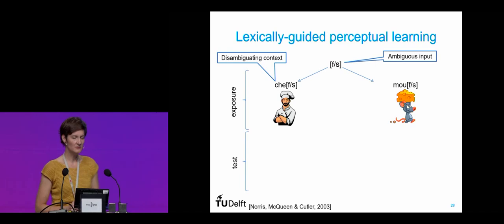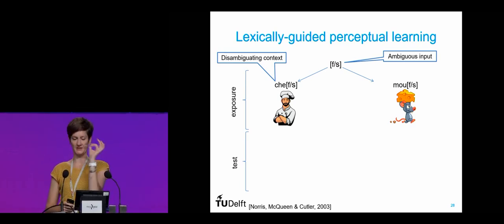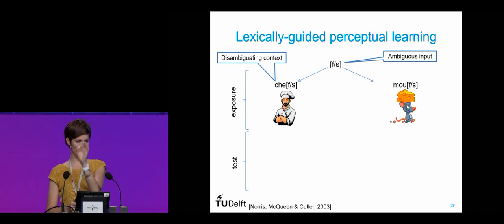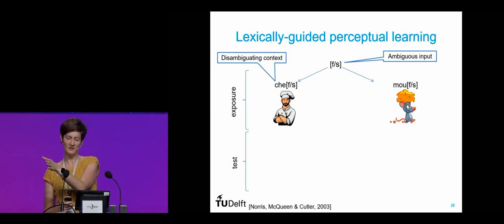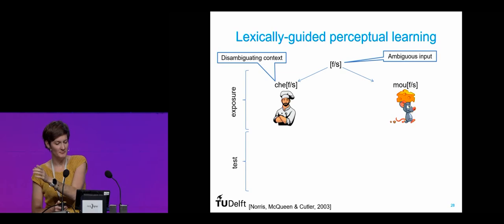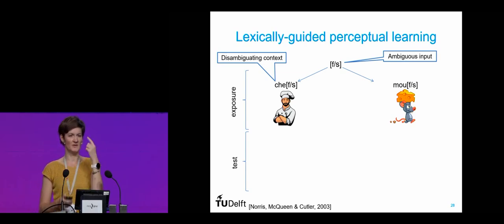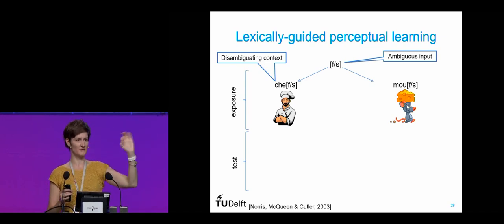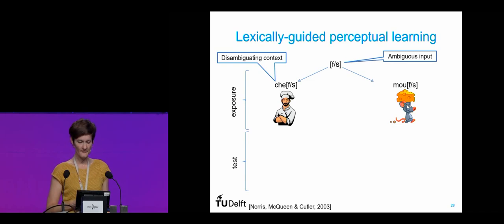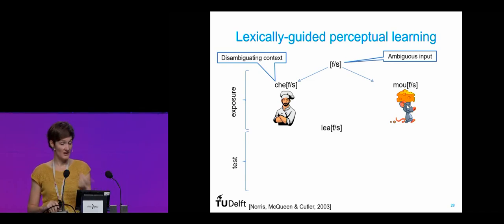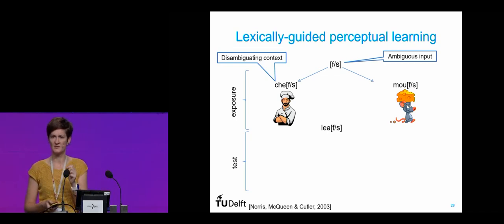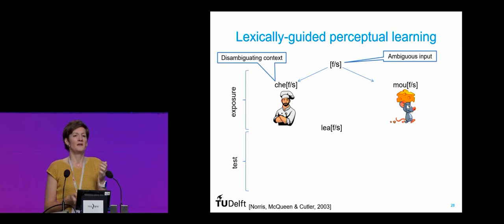To investigate this, my first experiments have to do with perceptual learning. Perceptual learning is defined as relatively long-lasting changes to an organism's perceptual system that improve its ability to respond to its environment. A specific type my colleagues and I have been investigating is lexically guided perceptual learning, originally defined by Norris et al. in 2003. This paradigm tries to understand how people adapt to ambiguous speech. You have an ambiguous input — something between 'f' and 's' — and one group hears it embedded in a word where it must be an 'f', like 'chef', while another group hears the same acoustic token in a word where it must be an 's', like 'mouse'.